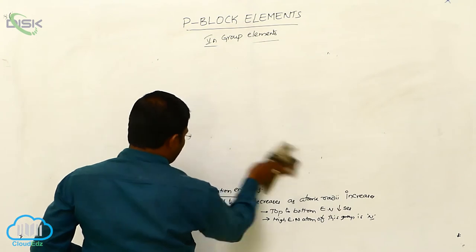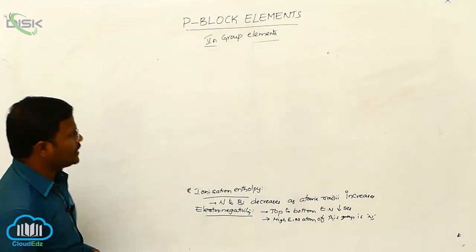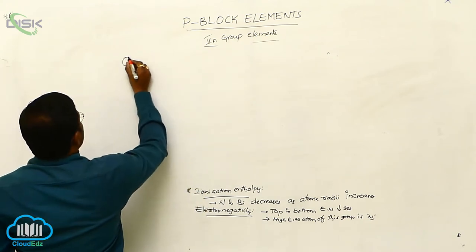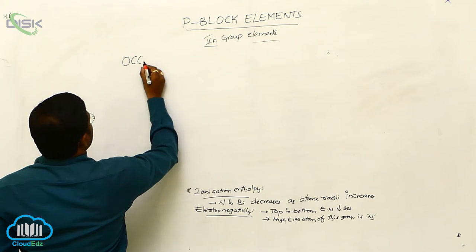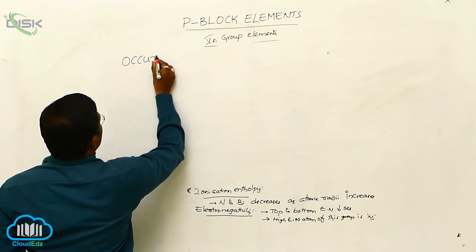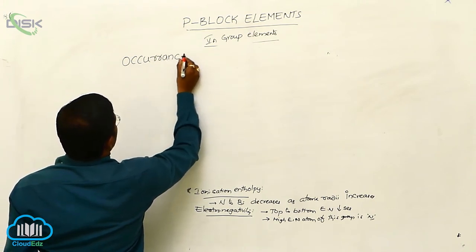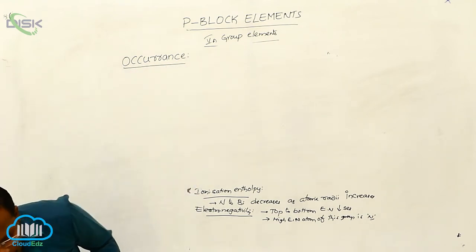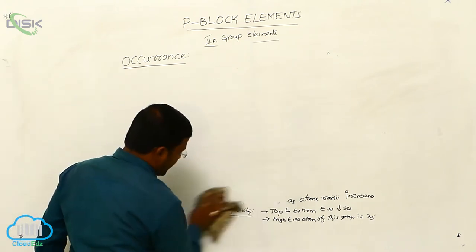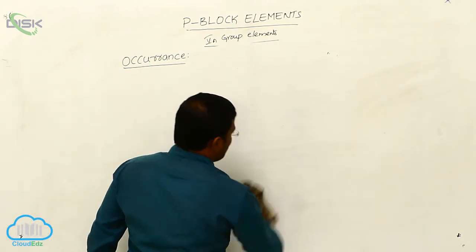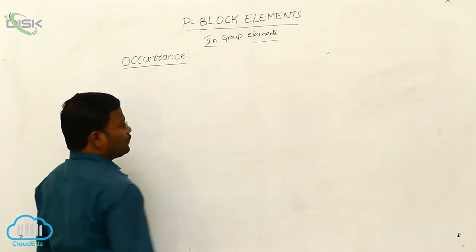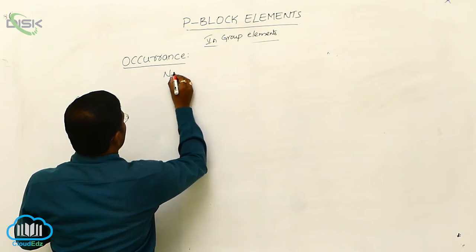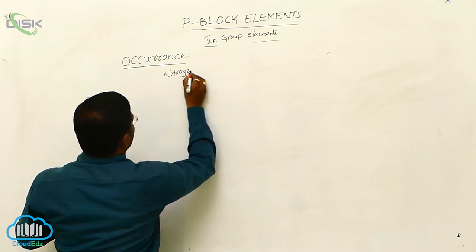The general electron configuration of group 15 elements is ns² np³. The next important concept is the occurrence — the availability of 15th group elements. Nitrogen is available in gaseous state.